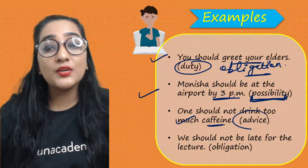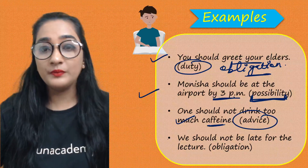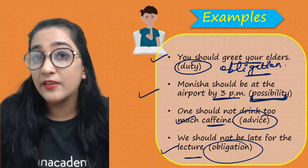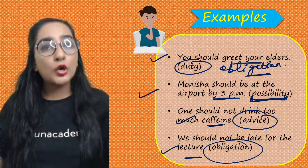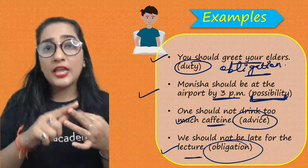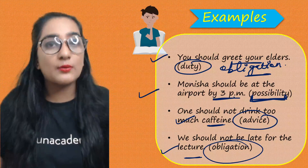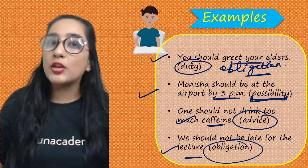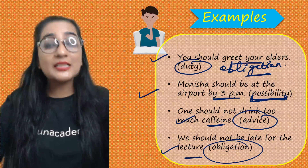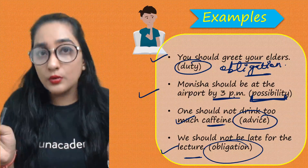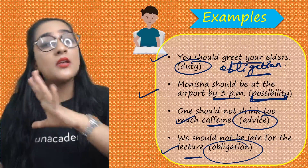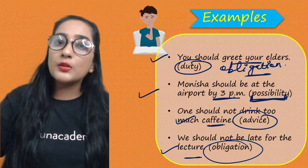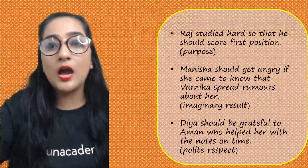Examples of SHOULD: 'You should greet your elders' — duty and obligation. 'One should not drink too much caffeine' — advice. 'We should not be late for the lecture' — obligation. To practice, form sentences with every modal verb in the comment section. Also, Wren and Martin is a highly recommended grammar book with ample questions related to grammar topics — go for the senior or junior level based on your current proficiency.